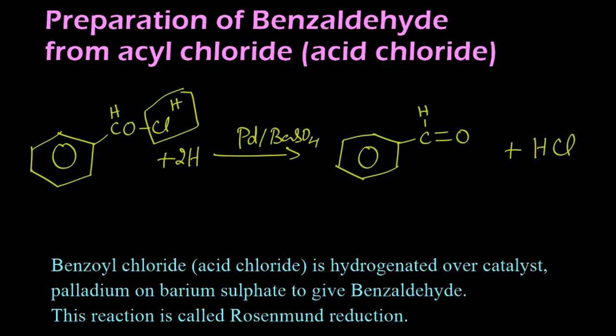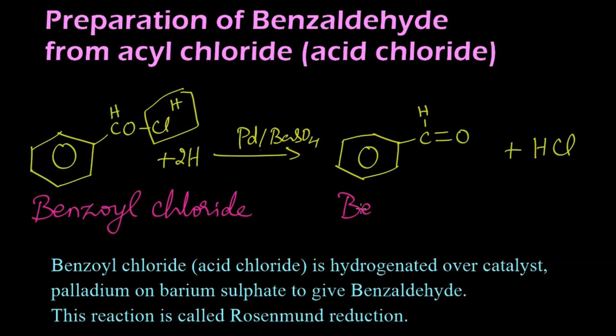Let us write the names for these compounds. This is benzoyl chloride. Benzoyl chloride is reduced in the presence of palladium on barium sulphate, and we get benzaldehyde with the elimination of hydrogen chloride.